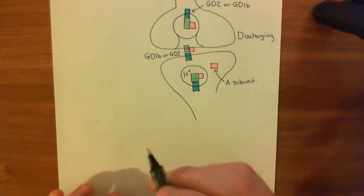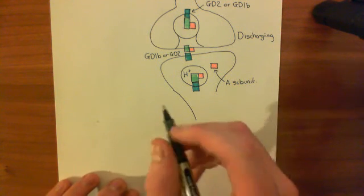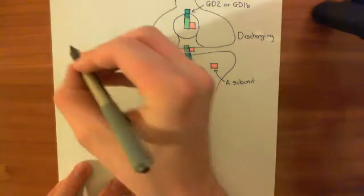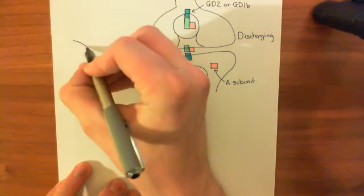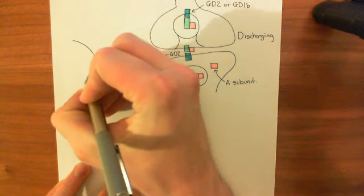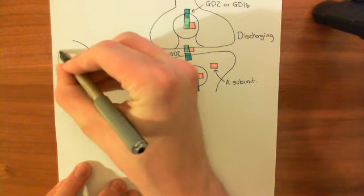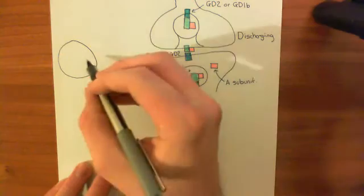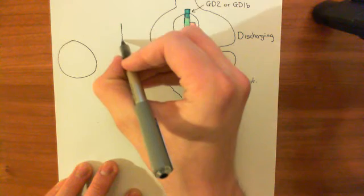Now we want to understand what this A subunit is going to do. In order to do that, we need to have a little revision of our SNARE proteins that we saw earlier. Let's say this is our synaptic vesicle, and let's revise the structure of the SNARE core complex that is used to dock this synaptic vesicle to the plasma membrane.